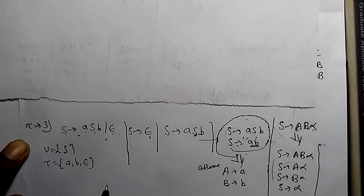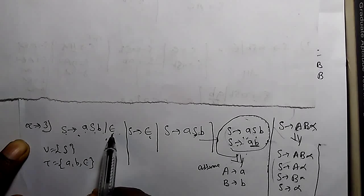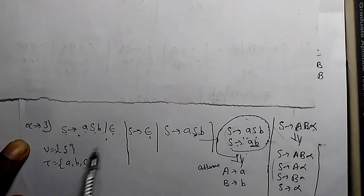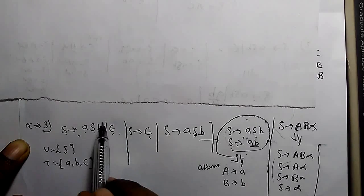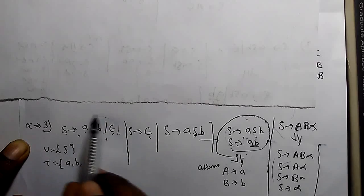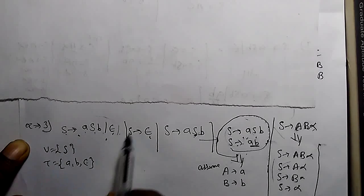As we know, a CFG can be normalized if it is free from null production. Here we can see there is null production, so first we have to make null elimination in this context-free grammar.